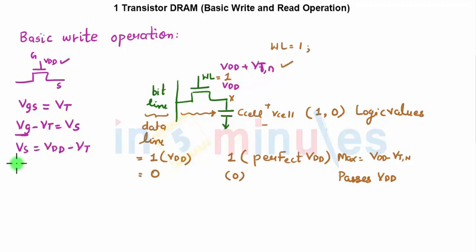In this case what I'm going to do is I'm going to make my gate voltage VDD plus VTN. So VS equals VDD plus VTN minus VTN because it's an NMOS. So this will get cancelled off and I'll get a perfect VDD at my node X or a perfect value high stored across my capacitor. This is how a write operation takes place.